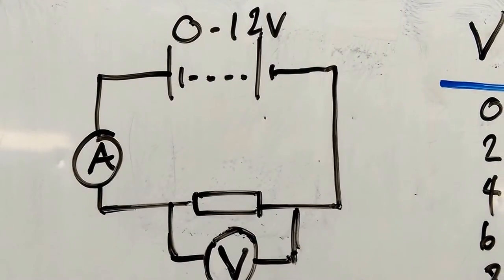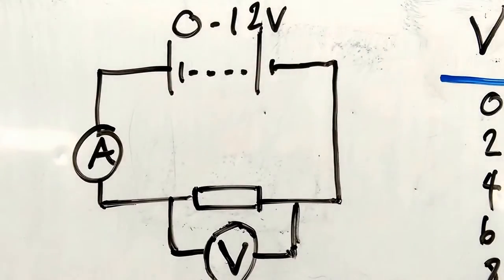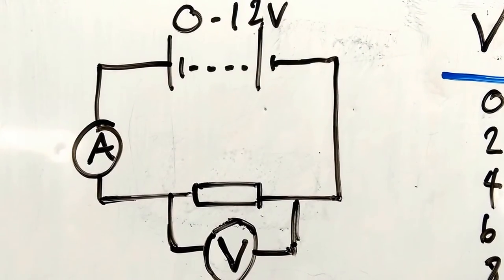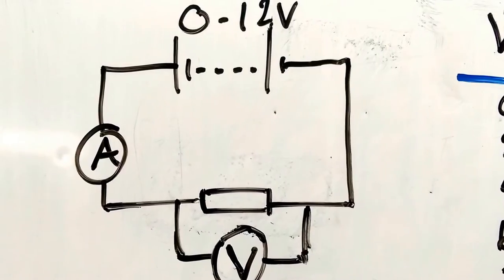An ammeter in series with a resistor and a voltmeter across it. Ammeters need to be in series, voltmeters need to be in parallel.